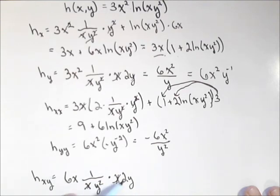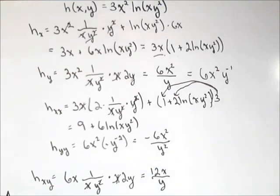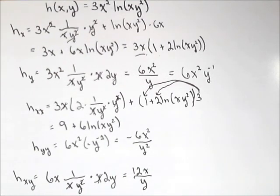So these x's cancel. We can cancel out one of our y's. And when all's said and done, we're gonna have 12x over y. All right, let's make sure that our mixed partials are equal. Let's find h sub y x for this guy.